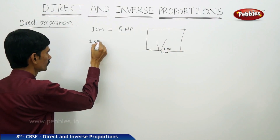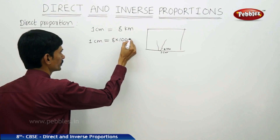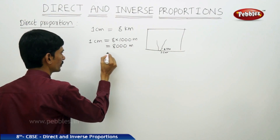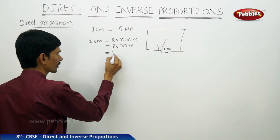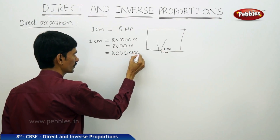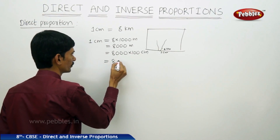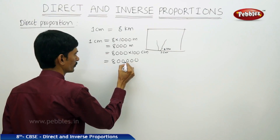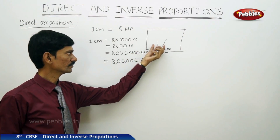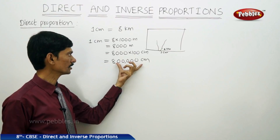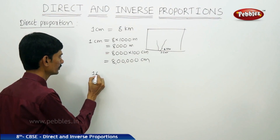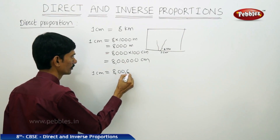One centimeter equals eight kilometers, which is 8 into 1000 meters, equals 8000 meters. Converting to centimeters: 8000 meters into 100 centimeters per meter equals 800,000 centimeters. So if the actual length of any region is 800,000 centimeters, then we take it as 1 centimeter on the map. This scale represents 1 centimeter equals 8 lakh centimeters.